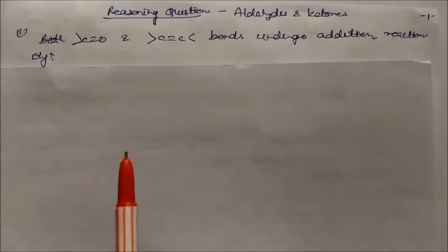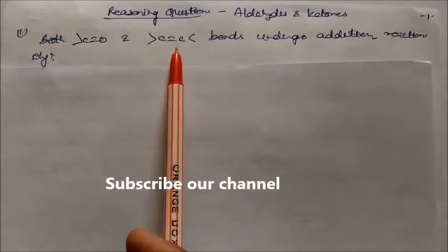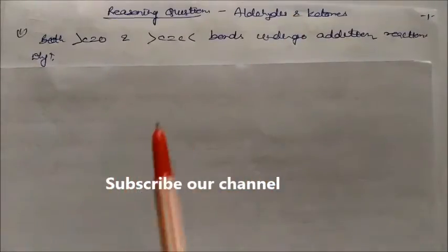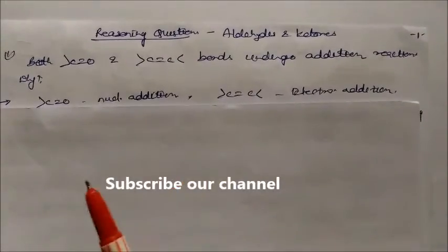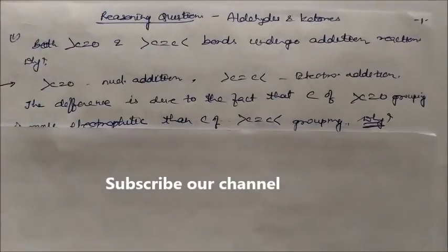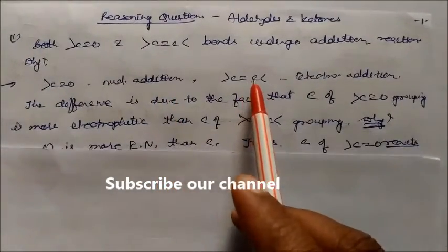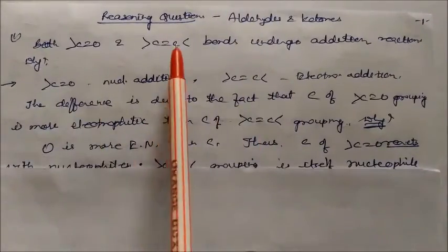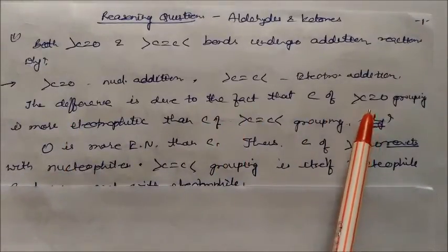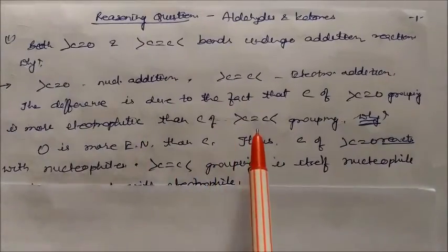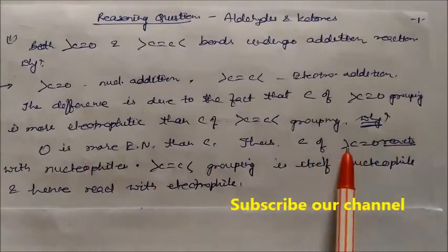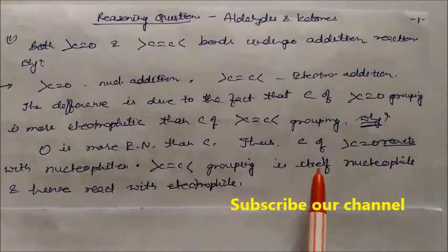Today we will see some important reasoning-based questions on aldehydes and ketones. Both ketone and alkene compounds possess double bonds and undergo addition reactions. The carbonyl compound undergoes nucleophilic addition reaction, but in case of the olefinic compound, it undergoes electrophilic addition reaction. This difference is due to the fact that the carbon of the carbonyl group is more electronegative than the carbon of the C=C double bond, because oxygen is more electronegative than carbon. Thus the carbon of the ketonic group reacts with nucleophiles, while the C=C grouping itself acts as a nucleophile and reacts with electrophiles.